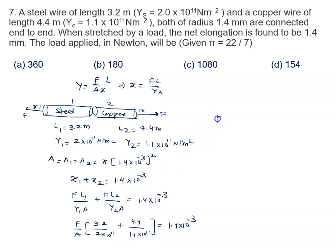Now we will calculate the value of F. Value of F is written as area. Area of cross section is pi then 1.4 into 10 raised to power minus 3 whole square and this 1.4 into 10 raised to power minus 3 already here upon 3.2 upon 2 into 10 raised to power 11 plus 4.4 upon 1.1 into 10 raised to power 11.